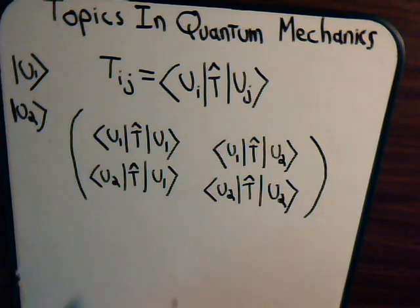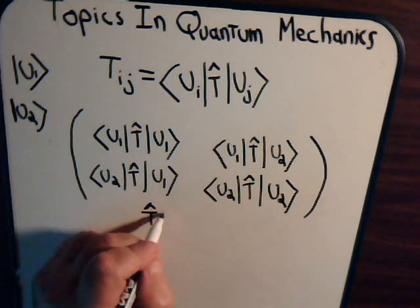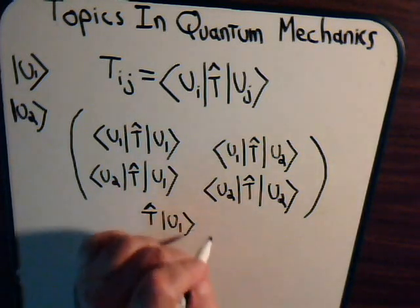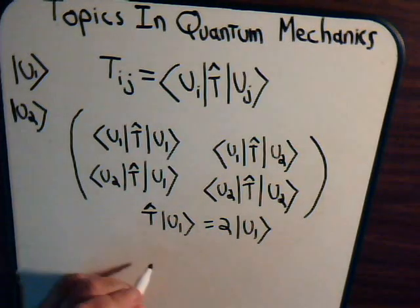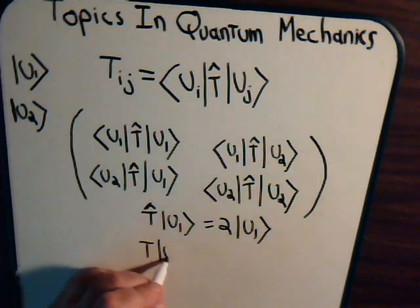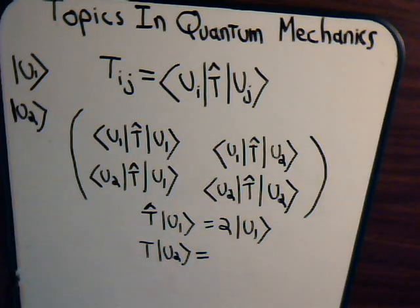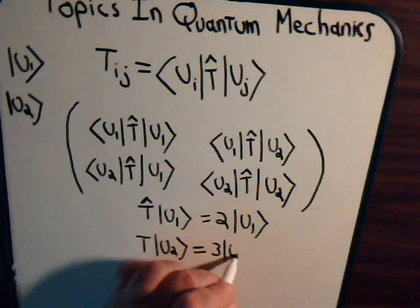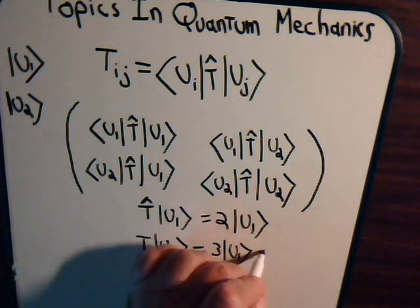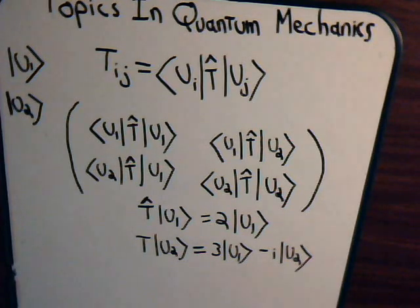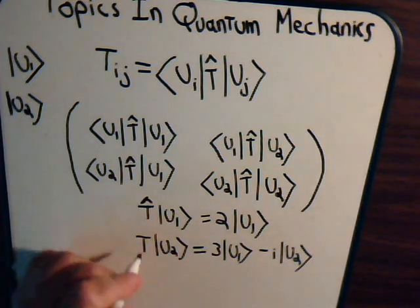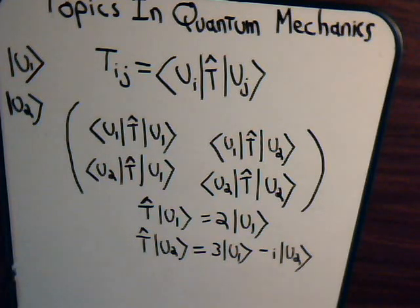To understand this further, let's say we have a linear operator T. When it operates on the basis vector U1, it multiplies that by 2. When it operates on the other basis vector U2, it produces 3 times U1 minus i times U2. So what would be the matrix representation of this linear operator?